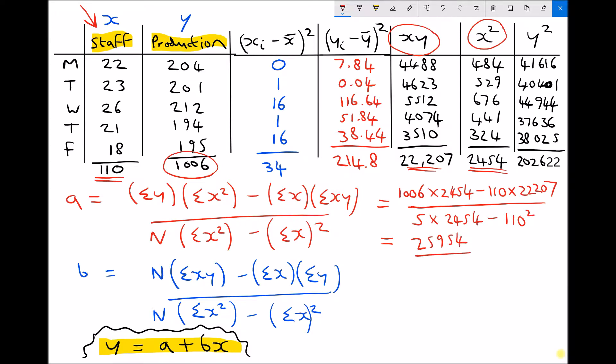The calculation for the bottom of that fraction gives me an answer of 170. Therefore, my value of a is 25954 divided by 170, which is 152.7. That's our value for a.